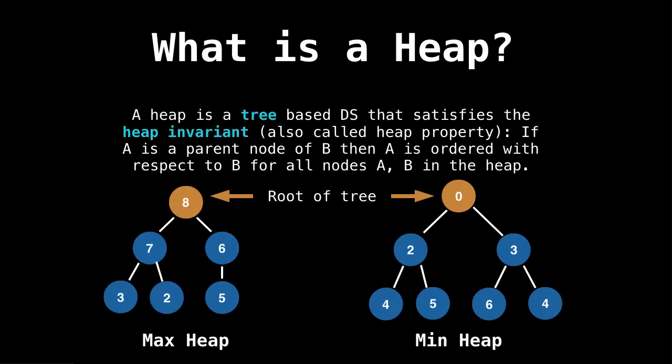So the next big question then is, what is a heap? Usually I make up my own definitions, but I really like this one from Wiki. A heap is a tree-based data structure that satisfies the heap invariant, also called the heap property. If A is a parent node of B, then A is ordered with respect to B for all nodes A and B in the heap. What this means is the value of the parent node is always greater than or equal to the value of the child node for all nodes, or the other way around, that the value of the parent node is less than or equal to the value of the child node for all nodes.